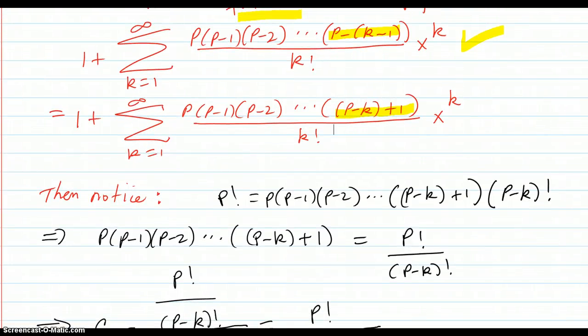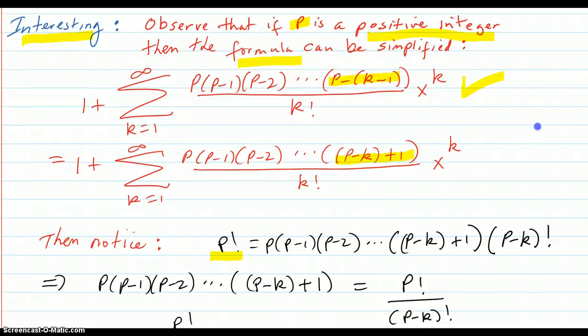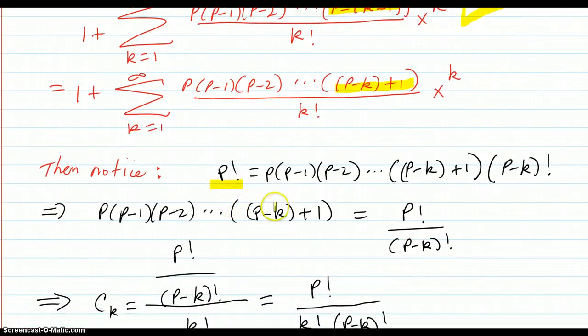Then notice that p factorial, because now p is a positive integer. Did I say that up there? Yeah, positive integer. p is a positive integer, p times p minus 1 times p minus 2, down to this number that you stopped at before in the formula. But if you continued on, this is p minus k plus 1, and the next one down would be p minus k factorial, and that would take you all the way down to 1. So p factorial is this, and then multiplied by the rest of it, which is this.